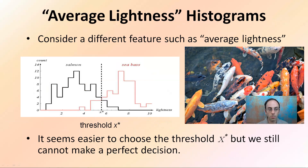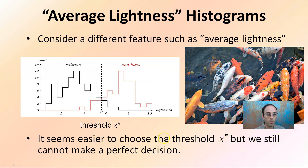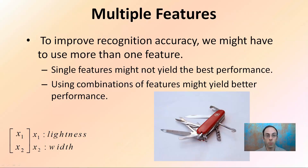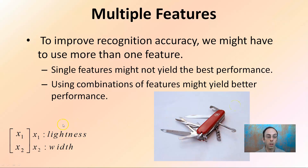Looking at average lightness of the histogram, it seems easier to choose the threshold at x, but we still cannot make a perfect decision. We can see where salmon are likely different from sea bass based on average lightness and different colorations. It doesn't always hold true, but there's definitely an area where most of the time it does. Multi-feature recognition can improve accuracy — instead of choosing just one feature, we can have multiple. Using a combination of features may yield better performance, like a Swiss Army knife. Using our past example, we can use lightness or coloration as well as the width or length of the fish.